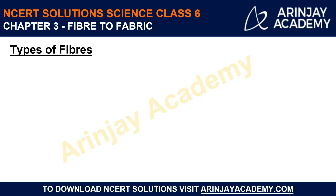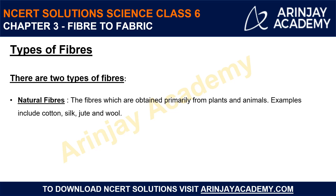There are two types of fibers. The first type is natural fibers — fibers which are obtained primarily from plants and animals. Examples include cotton, silk, jute, and wool. Almost all the fabrics we use around us come from natural sources: the cotton clothes we wear in summer, woolen clothes in winter, jute bags, and silk sarees. We are almost surrounded by natural fibers.